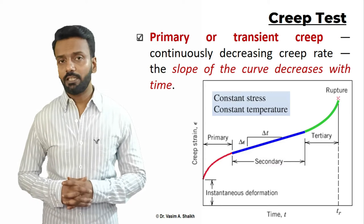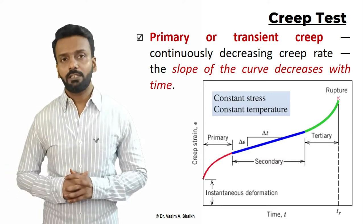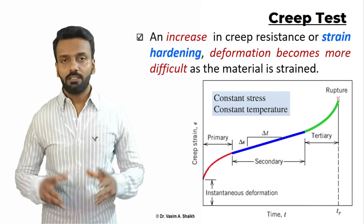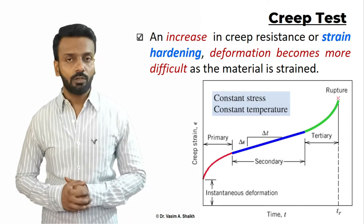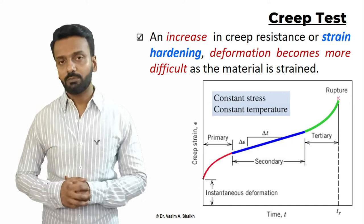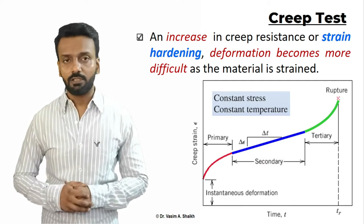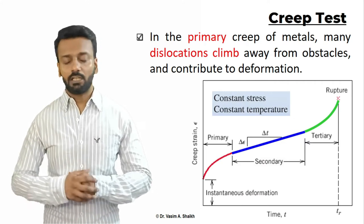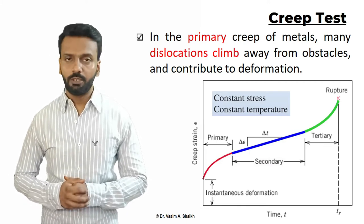The first stage is primary creep or transient creep. Here the slope of the curve is decreasing continuously with respect to time, indicating that the material is undergoing work hardening or strain hardening. As time progresses the material becomes more and more work hardened, stronger, and further deformation becomes difficult — that is why the slope decreases. The main mechanism during this stage is dislocation climb, where dislocations move away from obstacles, contributing to deformation.